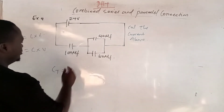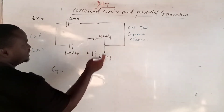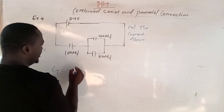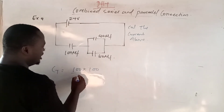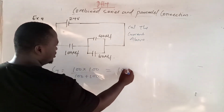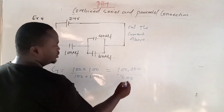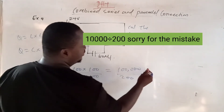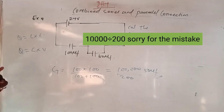This is in parallel, so we combine them together. Using product over sum: 100 × 100 all over 100 + 100, which gives 10000 all over 200. This cancels to give 50 microfarad. So the total capacitance is 50 microfarad.